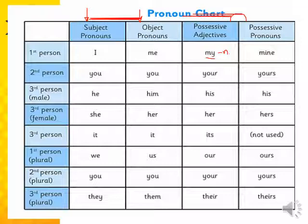Possessive pronouns, on the other hand, should not be followed by a noun. You cannot say 'mine bag' or 'yours school' — those are wrong. For example: 'This bag is mine' or 'This school is yours' or 'This car is his.' So mine, yours, and his can appear at the end of a sentence or before a verb, but not before a noun.